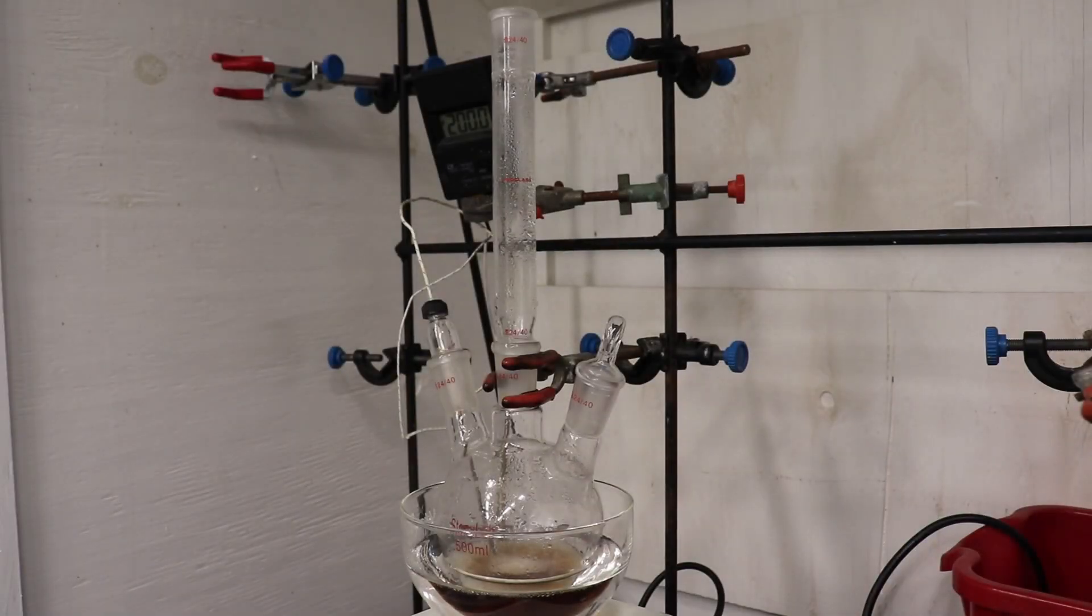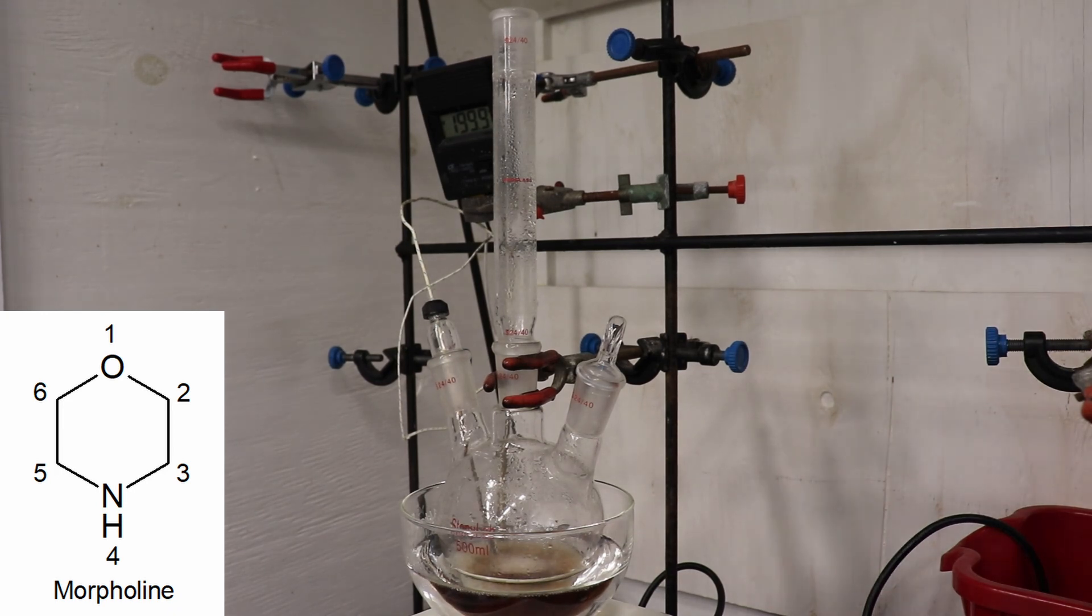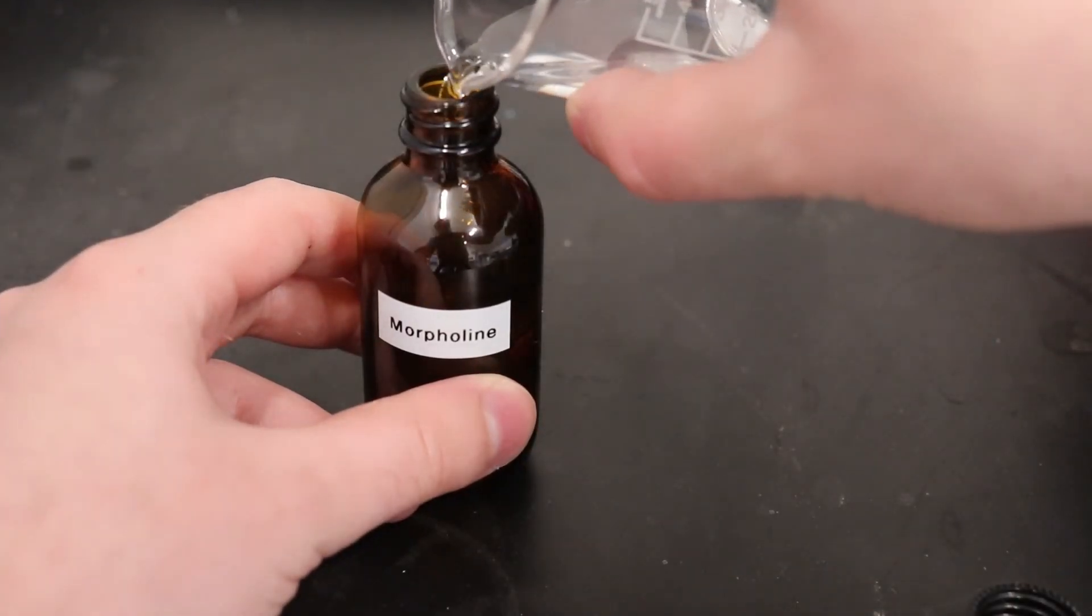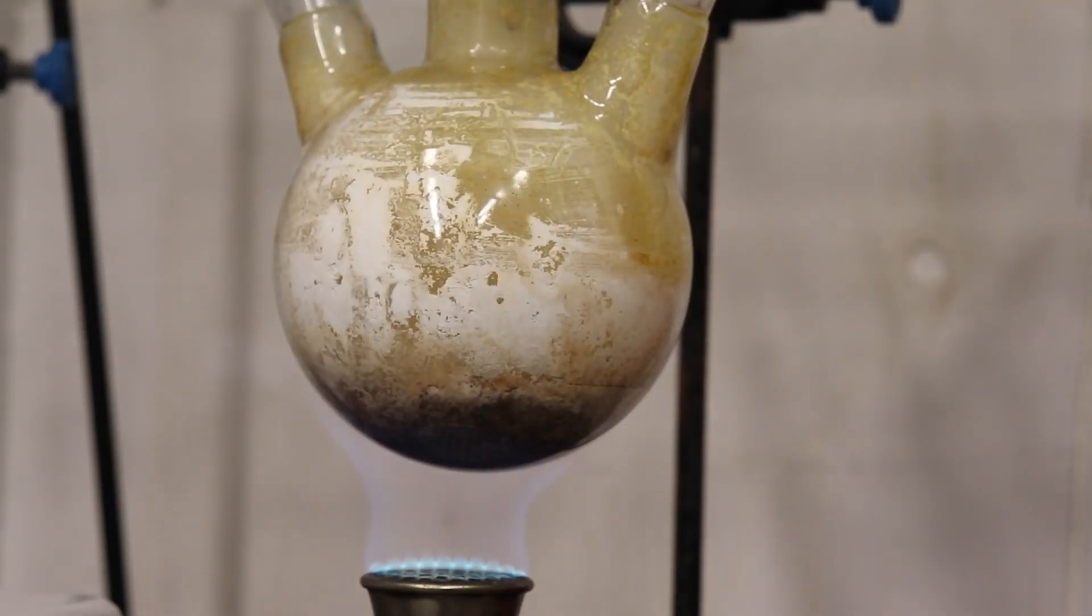Today I will be demonstrating the synthesis of morpholine from diethanolamine. Morpholine is a heterocyclic secondary amine with a wide range of applications, but is most commonly used in the formation of enamines and as a general building block in organic chemistry.